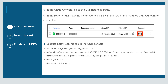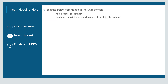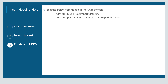These commands will install GCS Fuse. Second step: we have to execute the below command in the SSH console. We have to create a directory. After creating a directory, we will mount our bucket to the directory. Third step: after doing that, we will put the entire data to HDFS using the HDFS DFS -put command.